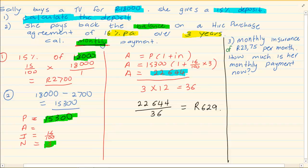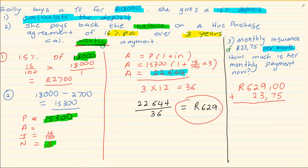So our monthly payment is 629 Rand. Now usually when they have a hire purchase there is also an insurance attached to it. This one says there is a monthly insurance of 23 Rand 75. So it's per month that she is paying this insurance. So we are going to take a total of 629 Rand and we are going to add the insurance to this amount which is 23 Rand 75. So now her final payment is 652 Rand and 75 cents.